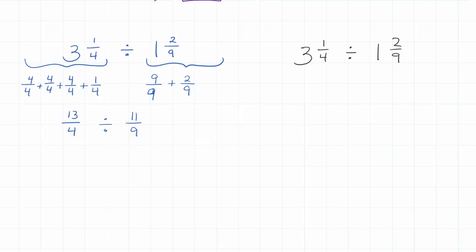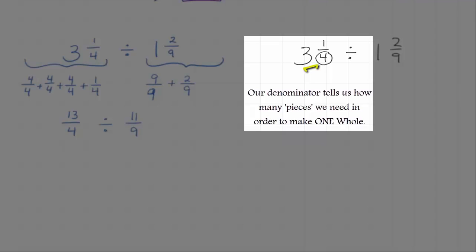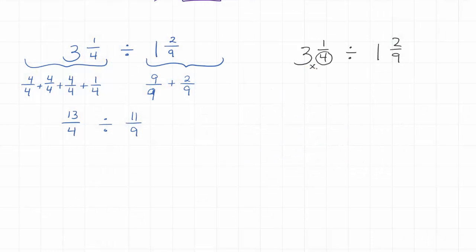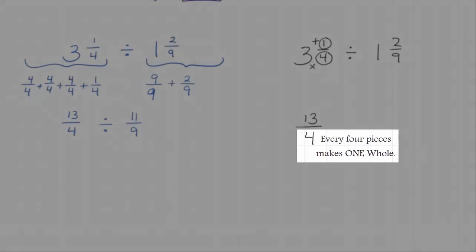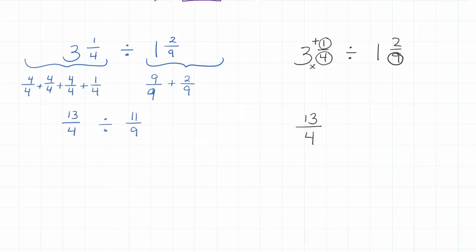Here's a faster way: take the denominator — which tells you how many pieces make a whole — and multiply it by the whole number. For three and one-fourth: four times three equals twelve, then add the one extra piece, giving thirteen-fourths. For one and two-ninths: nine times one equals nine, add two, giving eleven-ninths. Both methods give us the same improper fractions: thirteen-fourths divided by eleven-ninths.